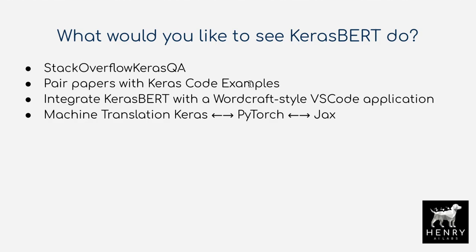I think it would be really exciting to leverage these Keras code examples — in my opinion, the best information repository for anyone looking to do deep learning research. They're mostly based on implementing papers, like the adaptive instance normalization example, supervised contrastive learning, and similar work. Maybe we can pair these papers with the Keras code examples so that you paste in a new paper and it gives you a corresponding Keras code example implementation of the ideas in that paper. I think that's an extremely exciting idea.